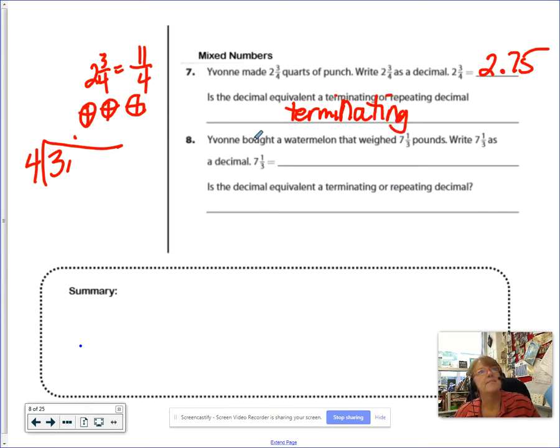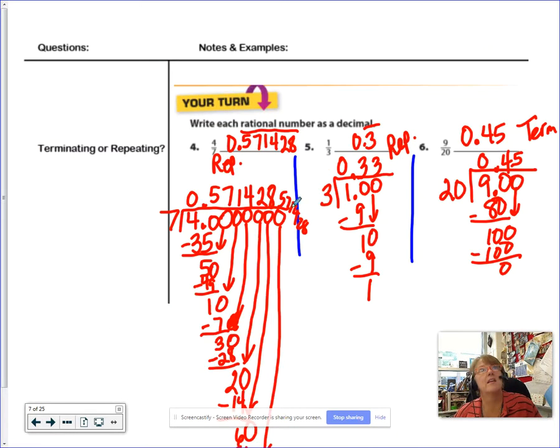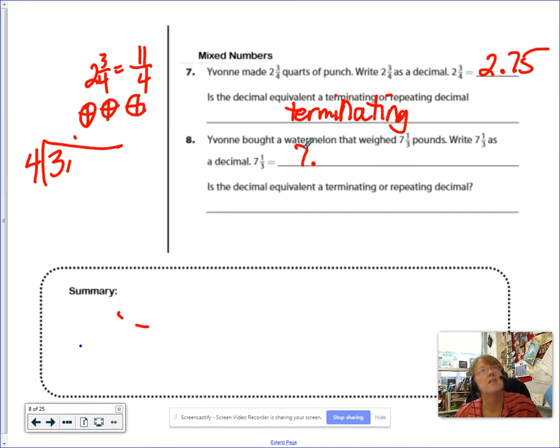Look at number eight. Yvonne bought a watermelon that weighed seven and one-third pounds. Write seven and one-third as a decimal. Seven point. Now, knock, knock. We just did one-third. Can you remember what we said? One-third is zero point three repeating. So you have a seven. And then the decimal part is the point three repeating. Okay? This one is a repeating decimal.